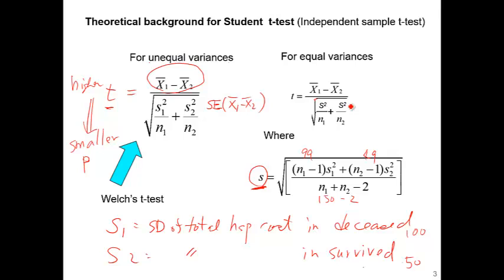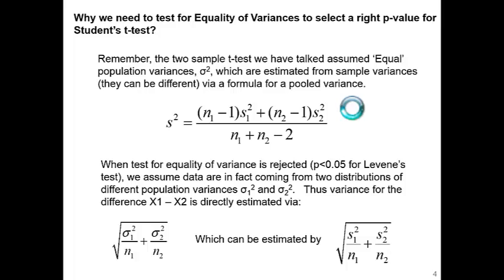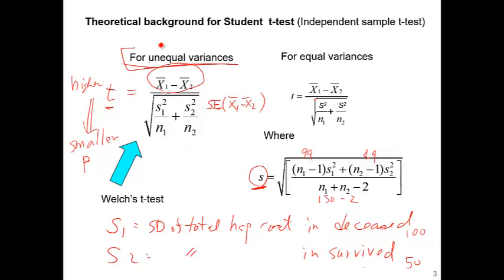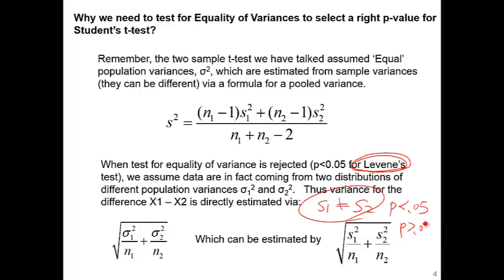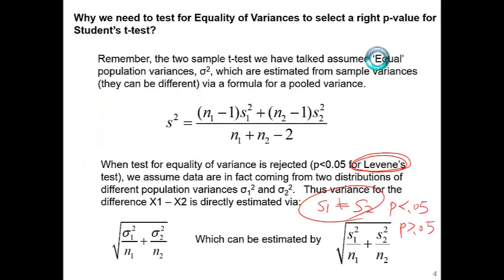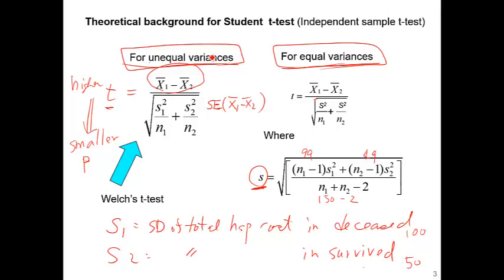That's the difference between the two formulas. In many statistical software packages, the t-test automatically comes with another test called Levene's test, which compares whether S1 is the same as S2. If Levene's test p-value is less than 0.05, we consider S1 is different from S2 and use the t-test for unequal variances. If Levene's test p-value is greater than 0.05, you use the t-test for equal variances. In SAS or SPSS, you first check the p-value from Levene's test and choose accordingly.